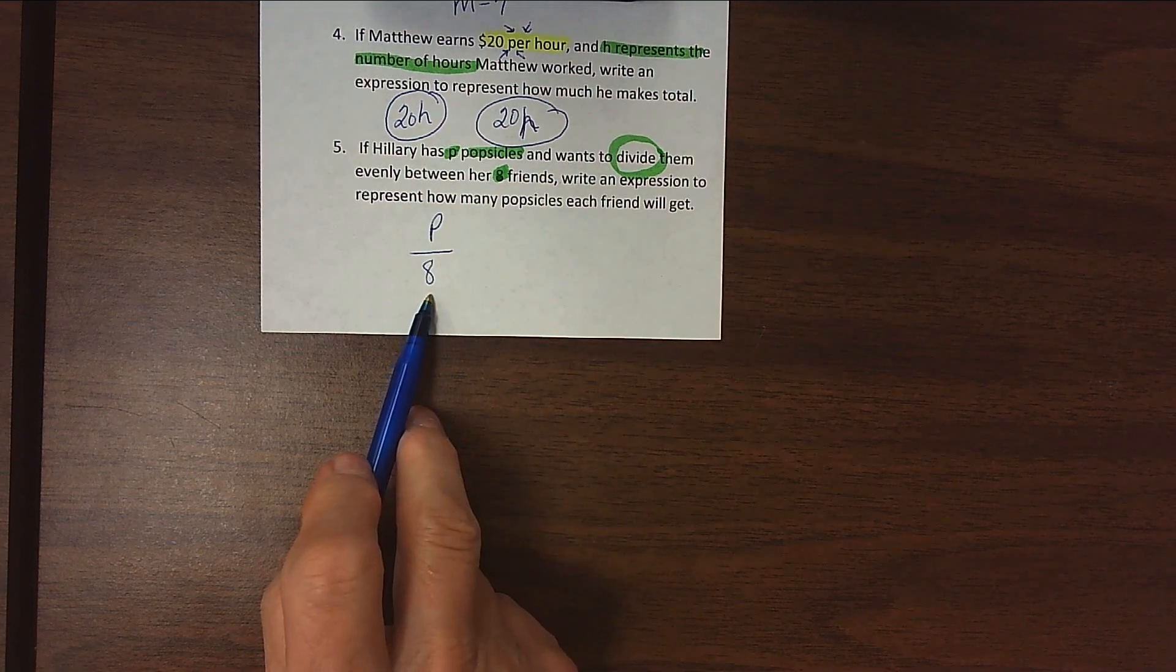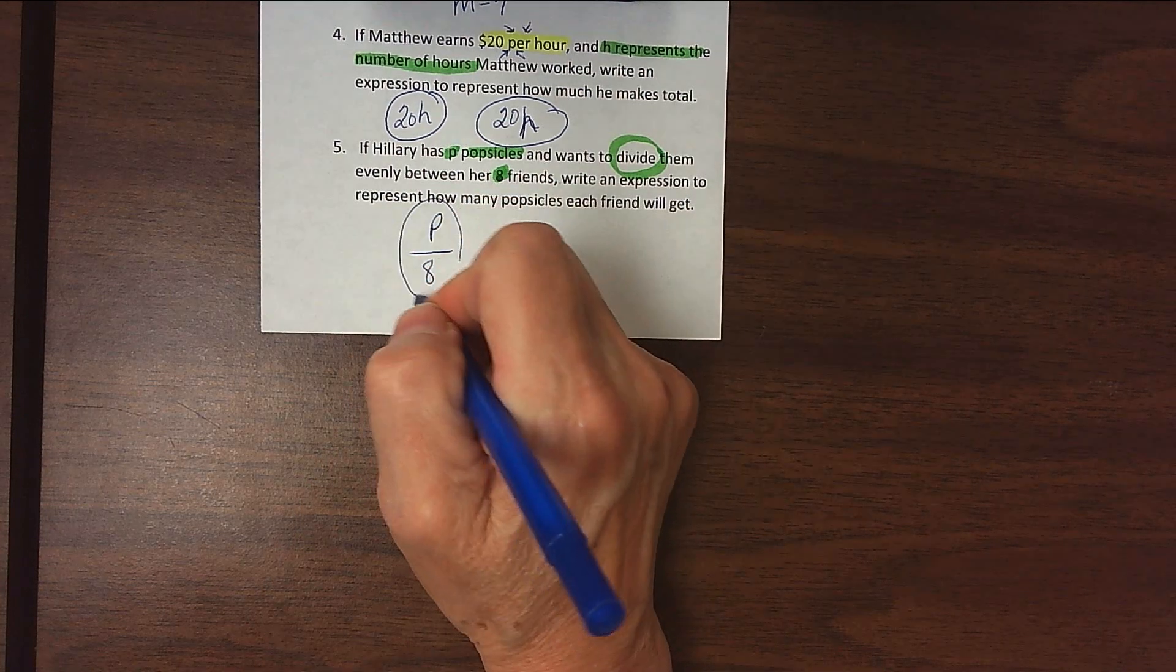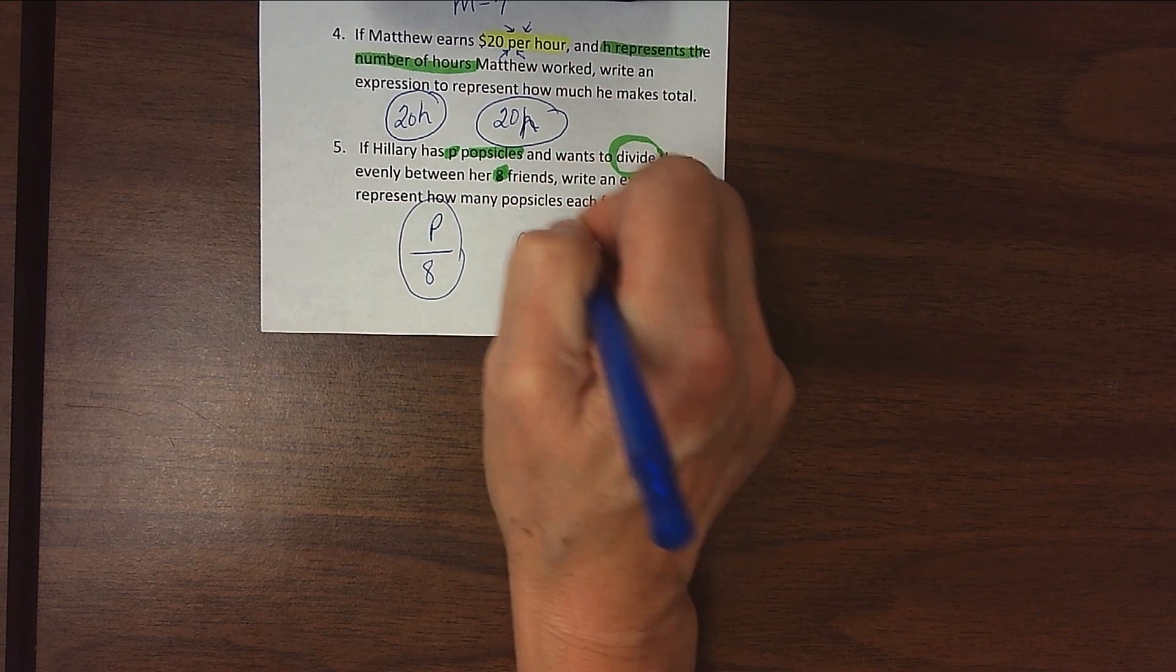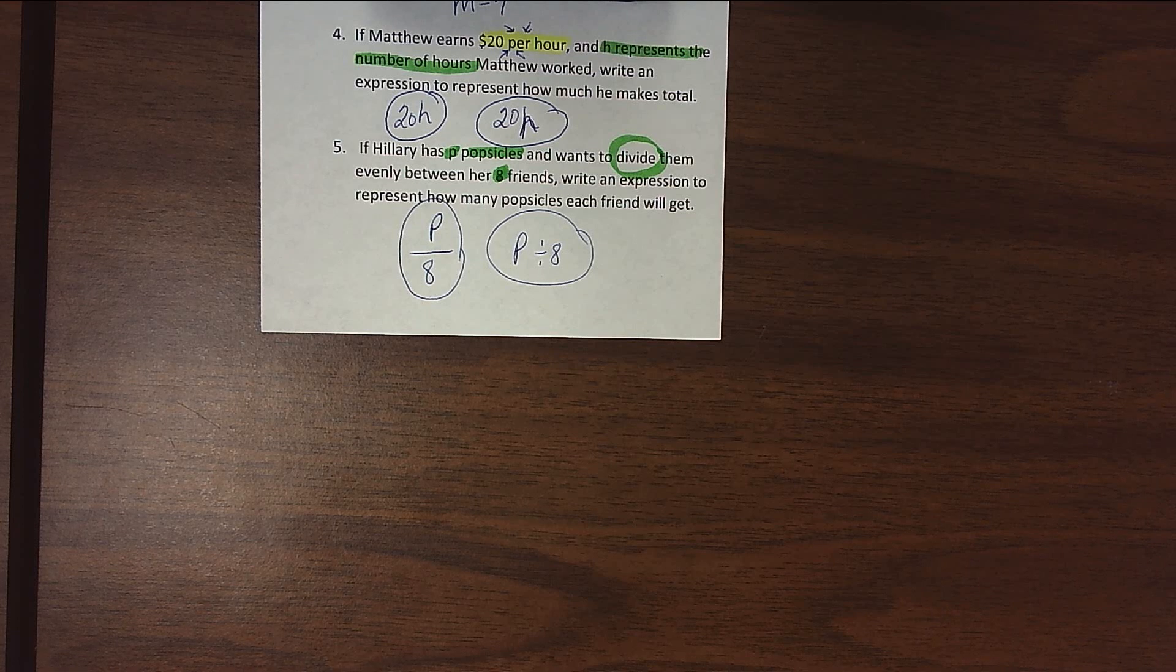You'll often see a division problem written like this when you're dealing with algebra, so that just means P divided by eight, but you could also write it this way if you felt more comfortable doing that. Either one of those would be fine. All right, we'll practice this a little more in class. Thanks for tuning in.